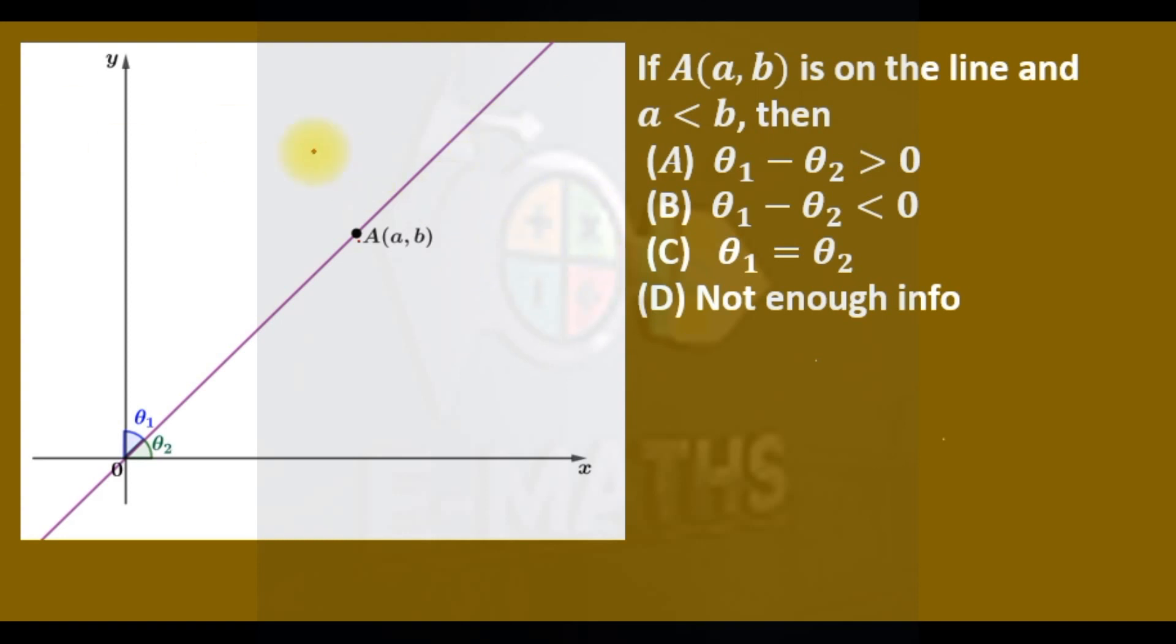Okay, let me just draw. We will have this line, and here a is equal to b. This is point A.